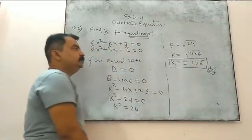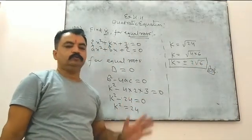It can be positive also, it can be negative also, that is 2√6.